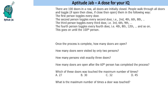Hello everyone, welcome to Aptitude Jab. This is a number puzzle. It says that there are 100 doors in a row. All doors are initially closed. People walk through these doors and toggle them — if a door is open, they close it; if it is closed, they open it.